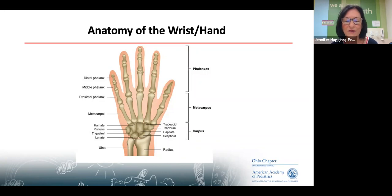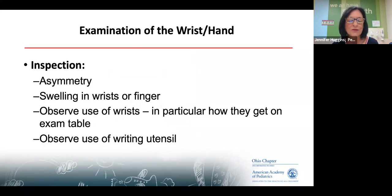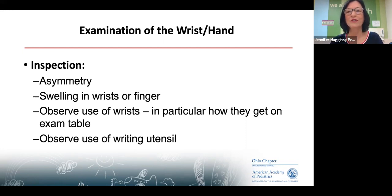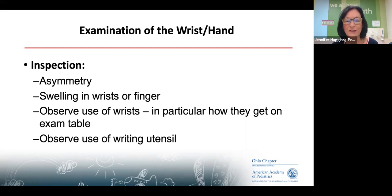For the exam, you can see asymmetric thumb swelling quite quickly. Looking at the PIP — the middle joint — you can see how much more swollen it is on one side. Patients with severe wrist inflammation will hold their hands like they don't really want to move them. For hypermobile patients, look to see how they hold their pencil — they usually have a death grip on the pencil, and by the time they get to occupational therapy, OT will make modifications to help them grip more easily.